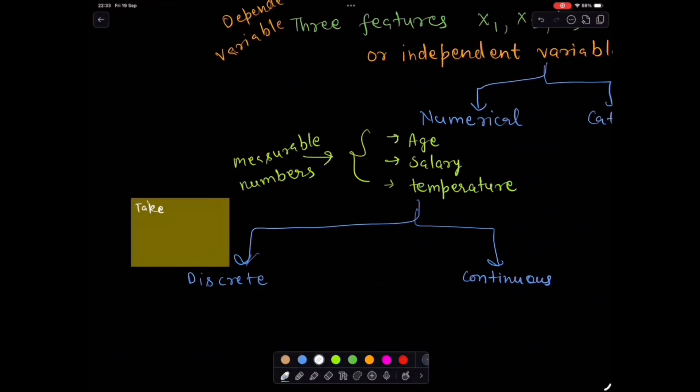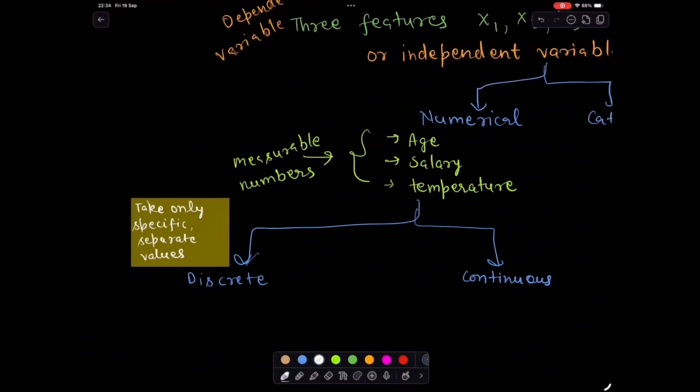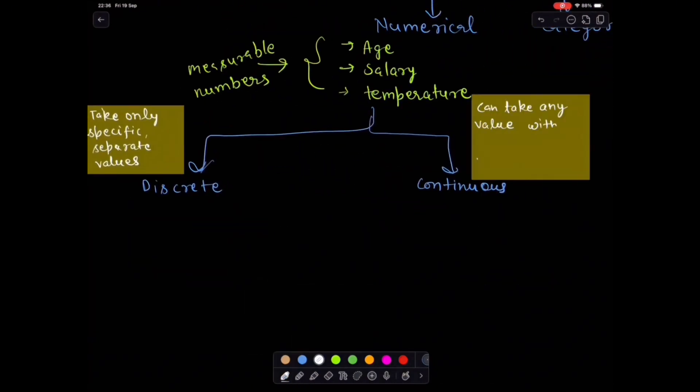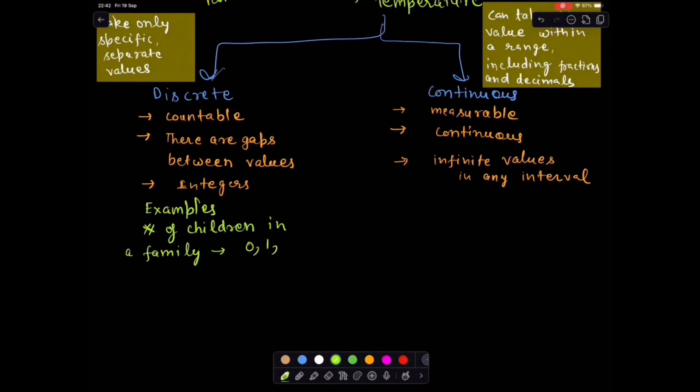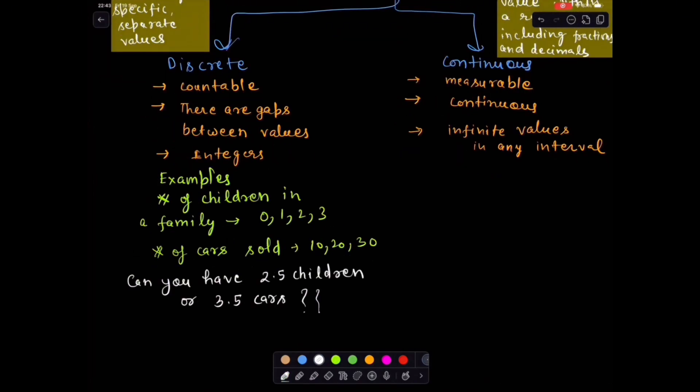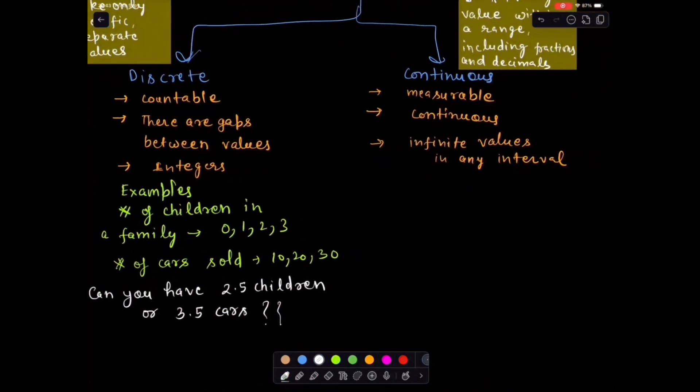Discrete variables can take only specific separate values, usually integers. Example: number of children, 0, 1, 2, number of cars, number of females. Can you have 2.5 children or 3.6 cars? Of course not. That's why they are discrete.